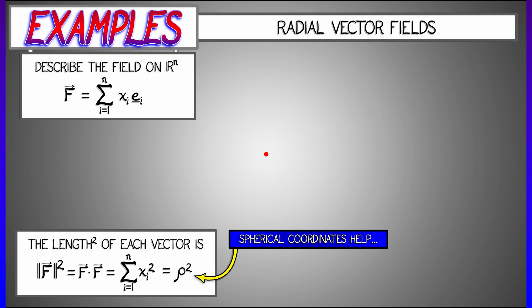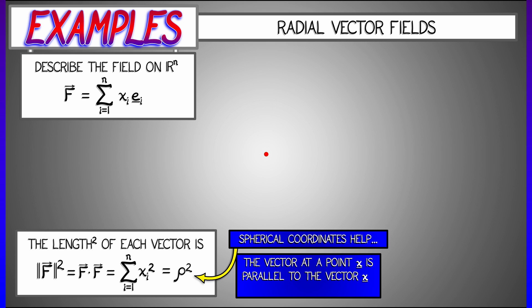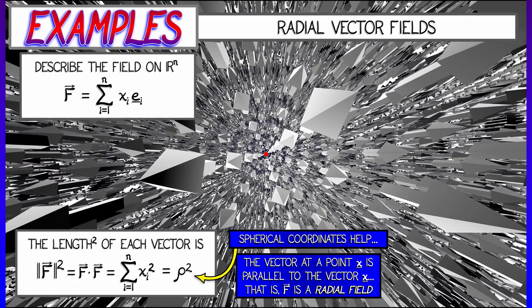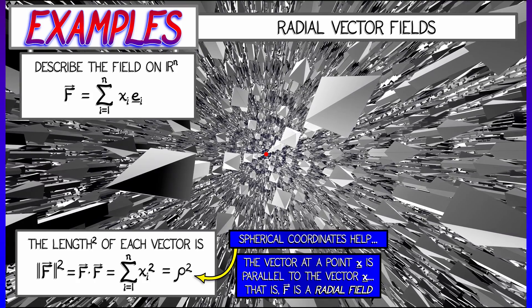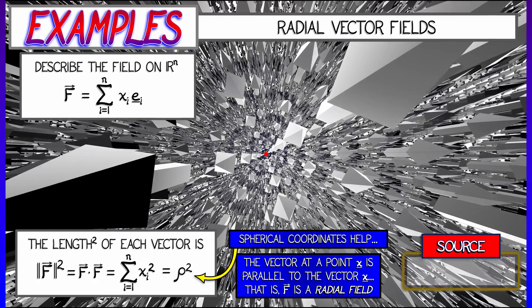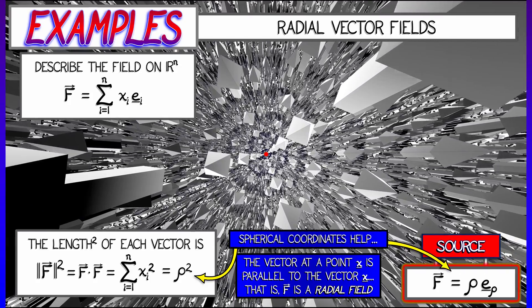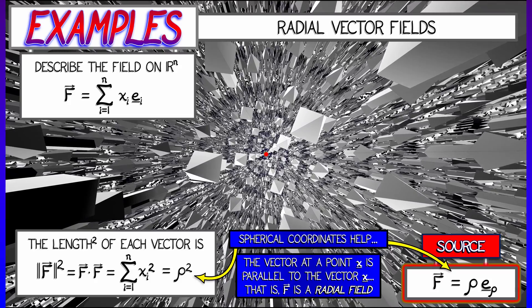Well, the direction is exactly pointed out straight away from the origin. This is a radial vector field that is often called a source, and is very compactly described in terms of spherical coordinates.